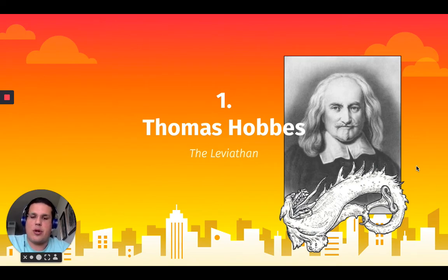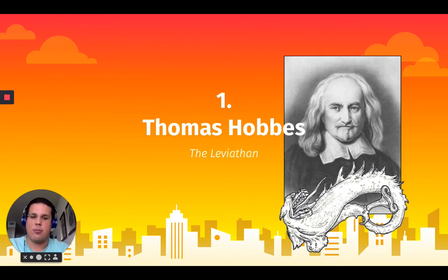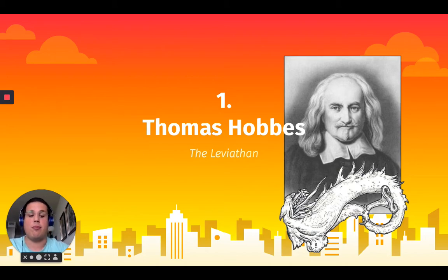The first social contract theory that we're going to be talking about is the one by Thomas Hobbes. He wrote the Leviathan. The Leviathan is basically a symbol for that authority figure under pactum subjectionis, who is going to be taking over the rights and freedom of people in order to protect them.